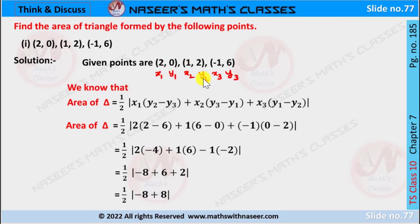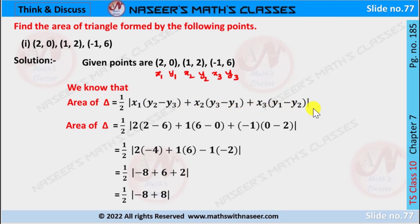x2 is 1, y2 is 2; x3 is −1, and y3 is 6. We already know the area of a triangle in coordinate geometry is: one-half times the modulus of x1(y2 − y3) plus x2(y3 − y1) plus x3(y1 − y2). Now we substitute the x1, y1, x2, y2, x3, y3 values.